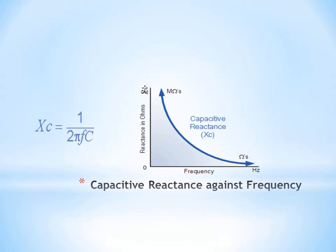From this graph of reactance versus frequency, it's evident that when frequency is very low, capacitive reactance is high. As frequency increases, capacitive reactance becomes low.